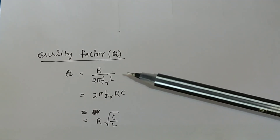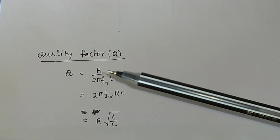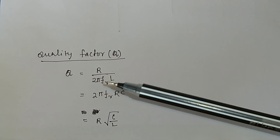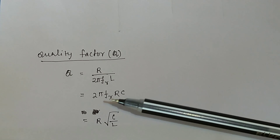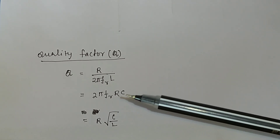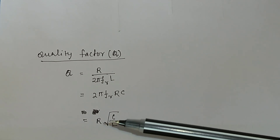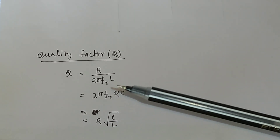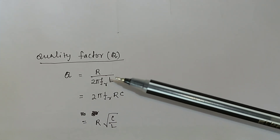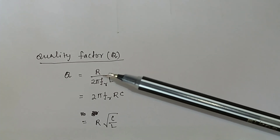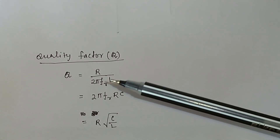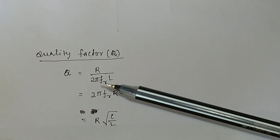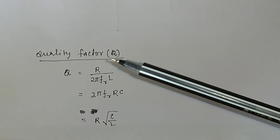How do we calculate the quality factor in a parallel LCR circuit? Quality factor equals R divided by (2π times FR times L) in terms of R and L. In terms of R and C, it is 2π times FR times RC. In terms of R, L, and C, it is R times the square root of C divided by L. From the known circuit values of R, L, and FR obtained from the response curve, you can calculate the quality factor.